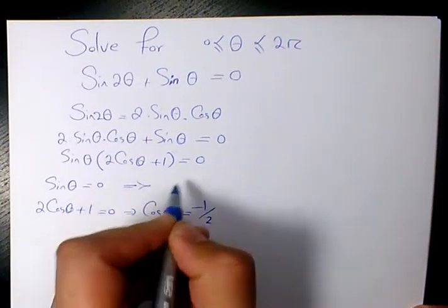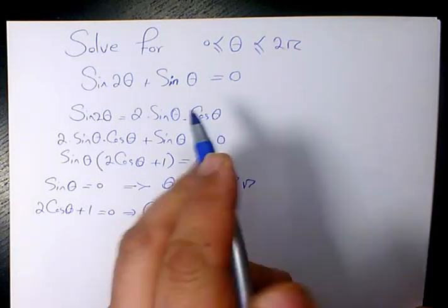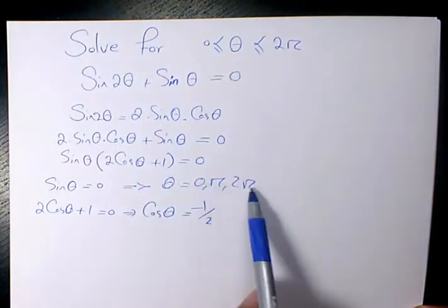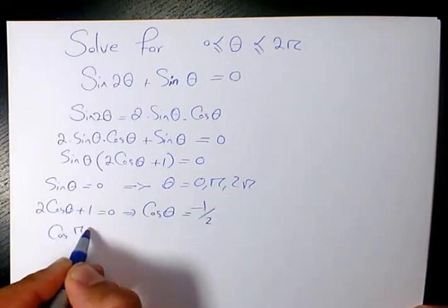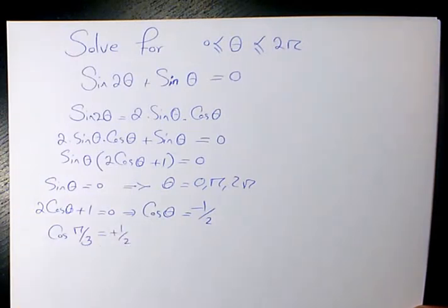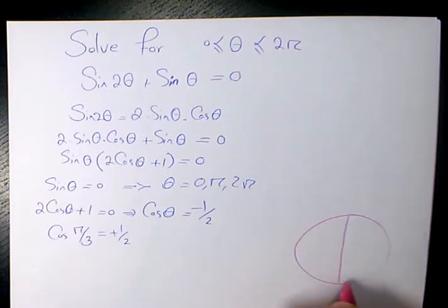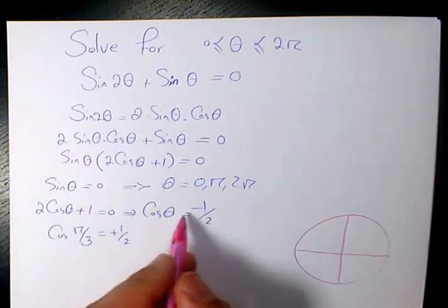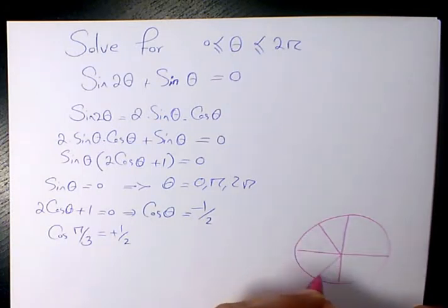Sine theta is 0 when theta is 0, pi, and 2 pi. Cosine theta is negative 1 over 2. We know cosine pi over 3 equals positive 1 over 2, and cosine is negative in quadrant 2 and quadrant 3.